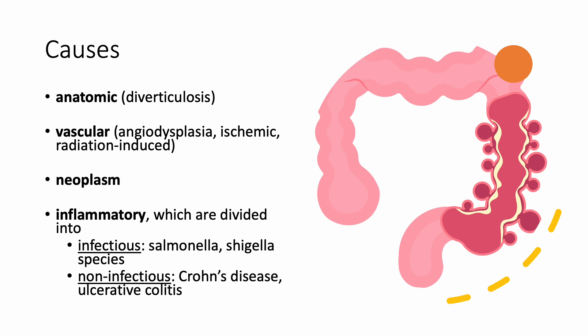In general, anatomic causes and vascular causes present with painless lower GI bleed, compared to an inflammatory cause which presents more with abdominal pain and diarrhea.